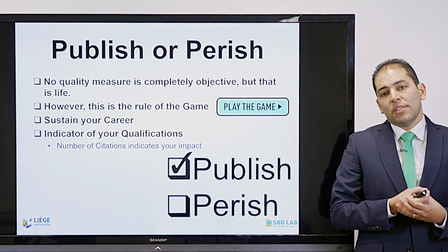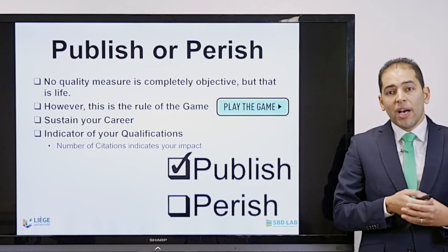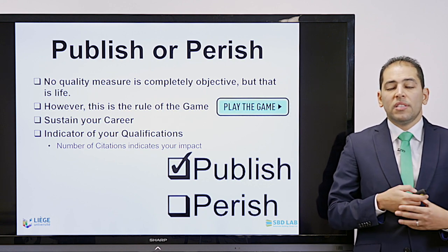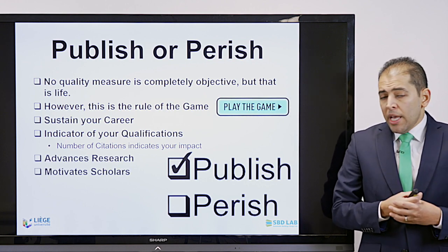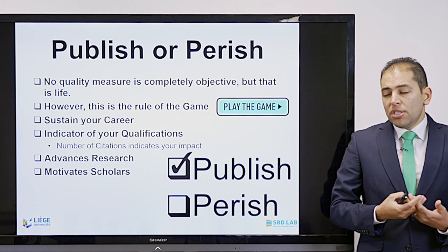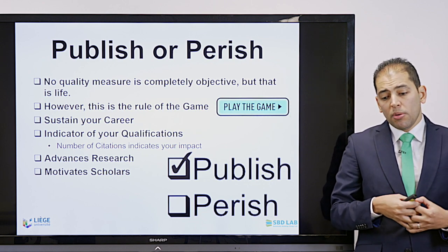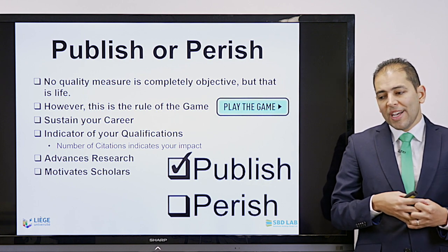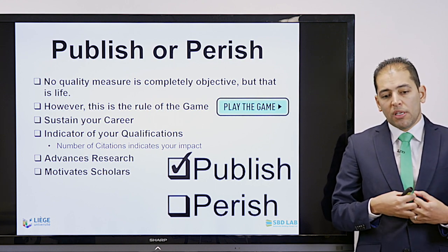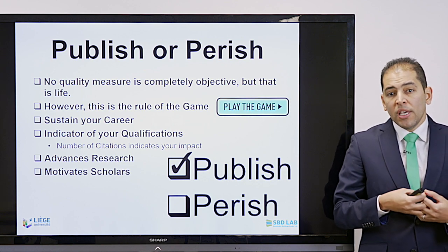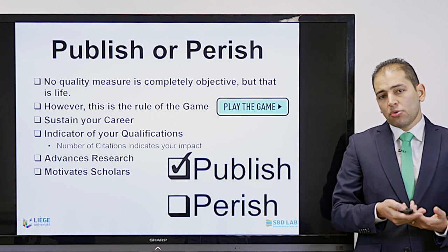Another important indicator is not only your number of publications but also the number of citations. You need to make sure that you have an impact, and through others reading your work and citing it, this is a sign that you are contributing and having a valuable contribution. By publishing, we should not forget our key message: we are advancing research and science, tackling challenging problems, covering knowledge gaps, and publishing something that is worthy and brings value.